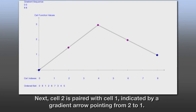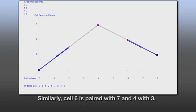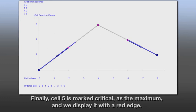Next, cell 2 is paired with cell 1, indicated by a gradient arrow pointing from 2 to 1. Similarly, cell 6 is paired with 7, and 4 with 3. Finally, cell 5 is marked critical as the maximum, and we display it with a red edge.